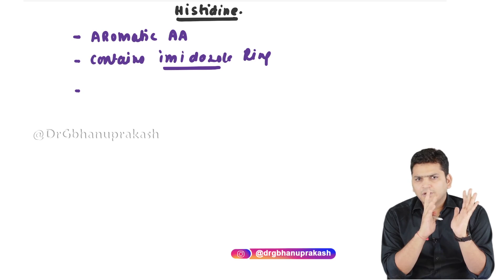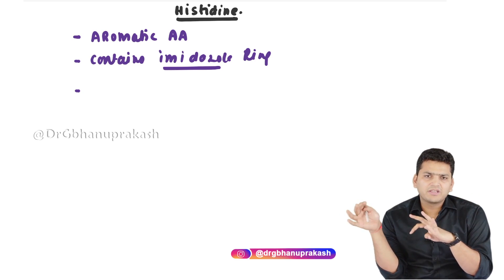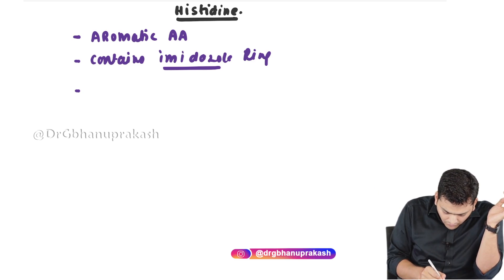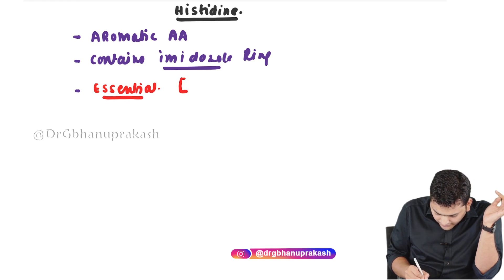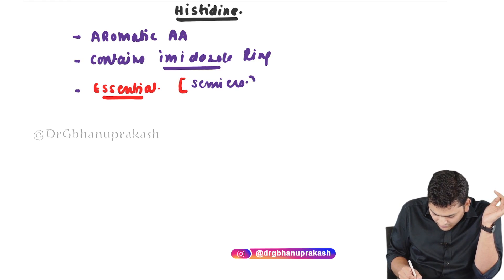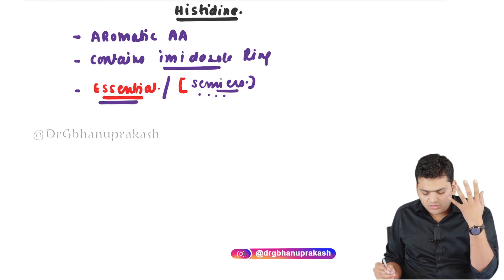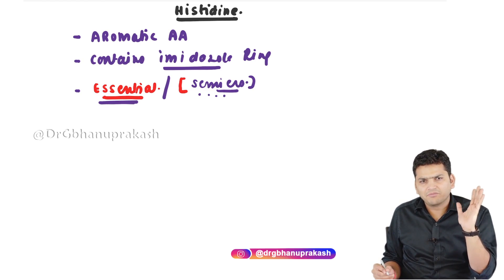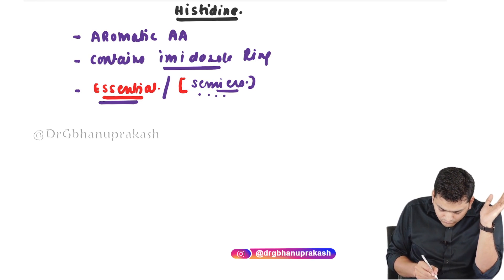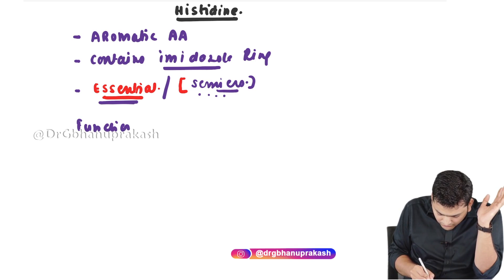One important point: histidine is considered an essential amino acid, but in some books it is written as semi-essential. If the option 'essential' is provided, consider histidine essential. If no such option is provided, choose semi-essential as the next best answer. Most books say it is essential, but some say semi-essential. We have discussed how to choose the correct answer in the classification of amino acids video.